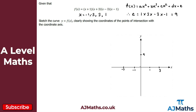The only thing left to consider is the general shape. Looking at the coefficient of x⁴: multiplying x × x × x × x gives x⁴ with a equal to 1. So we have a positive quartic, and the general shape will be this kind of W-shape.